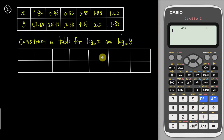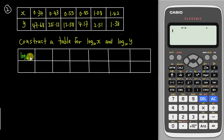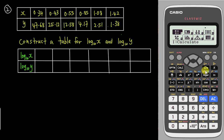Before ending the video, let's try one more example related to logarithms, which is very common in linear law — log₁₀ x and log₁₀ y for the x-axis and y-axis. I recommend starting with log₁₀ x since x is on the top row, then log₁₀ y. Go to the menu, choose number 8, and insert your data.